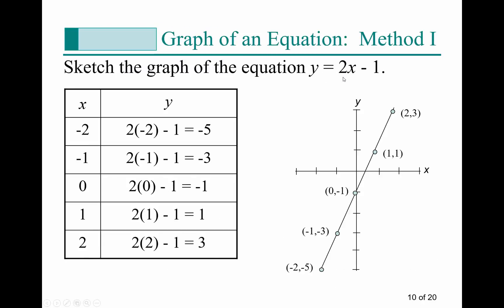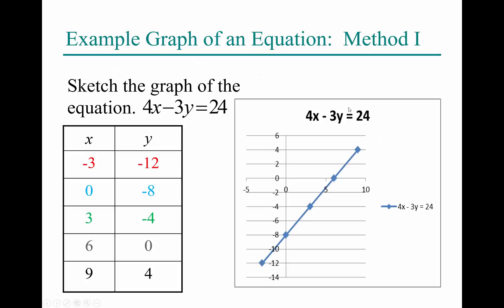Let's sketch the graph of y = 2x − 1 using ordered pairs, going from x = −2 to x = 2. When x = −2: y = 2(−2) − 1 = −5, giving (−2, −5). When x = −1: y = −3, giving (−1, −3). When x = 0: y = −1, giving the y-intercept (0, −1). When x = 1: y = 1, giving (1, 1). When x = 2: y = 3, giving (2, 3).